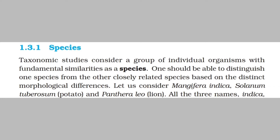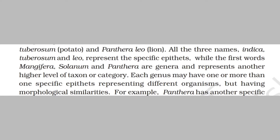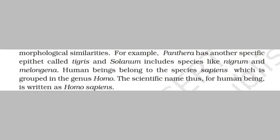Consider Mangifera indica, Solanum tuberosum, and Panthera leo. The specific epithets are indica, tuberosum, and leo, while the first words — Mangifera, Solanum, and Panthera — are genera, representing a higher level of taxon or category. Each genus may have one or more specific epithets representing different organisms with morphological similarities. For example, Panthera also has the specific epithet Tigris, and Solanum includes species like Nigrum and Melongena. Human beings belong to species Sapiens, grouped under the genus Homo, giving the scientific name Homo sapiens.